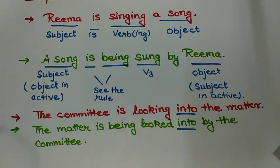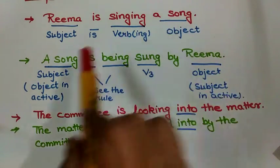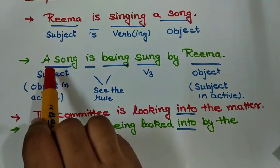When we convert this into present continuous passive, we can see that according to our constructional formula, this object should come here at the place of subject.